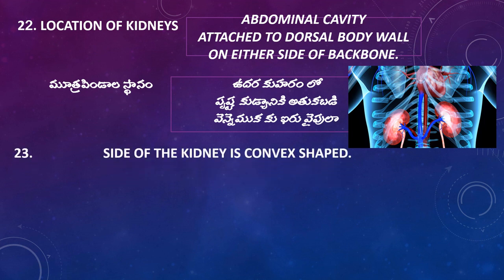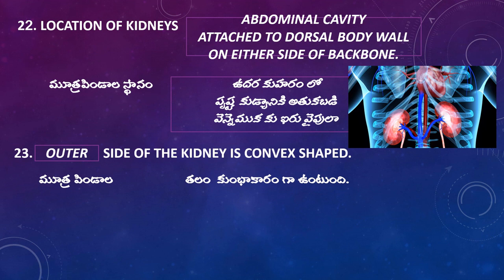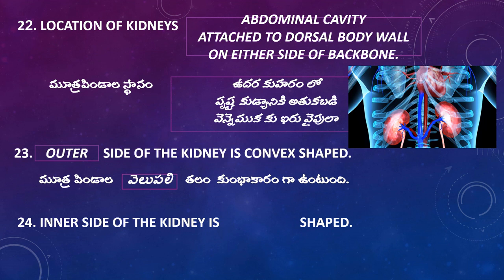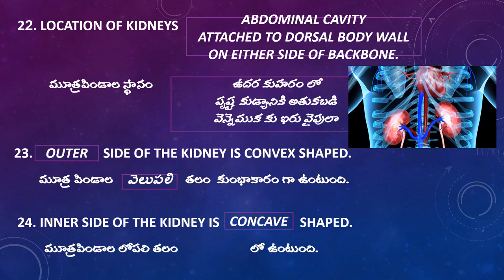The outer side of the kidney is convex shaped, while the inner side of the kidney is concave shaped. The hilus is present on the inner (concave) side of the kidney.